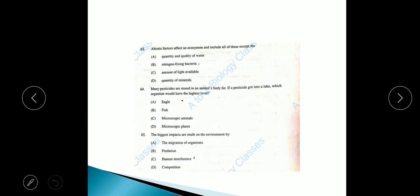Question 63: Abiotic factors affect an ecosystem and include all of these except option B, nitrogen fixing bacteria, because it is a biotic factor. The quantity and quality of water, amount of light available, quantity of minerals, these are all abiotic factors.